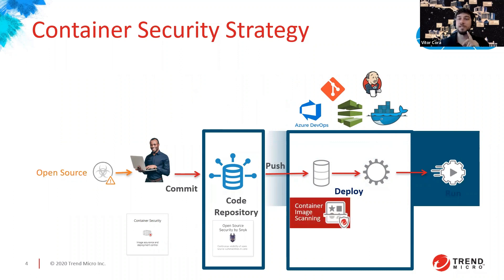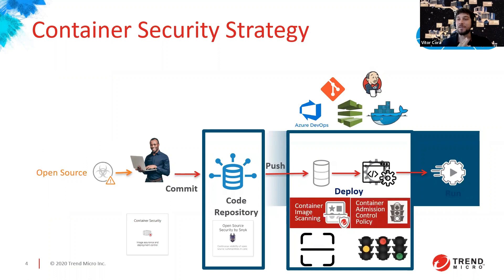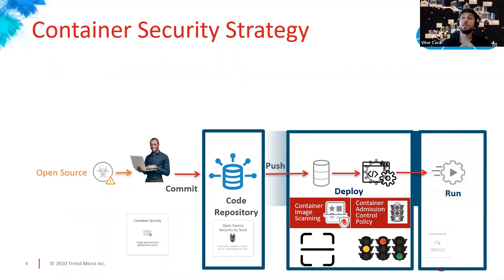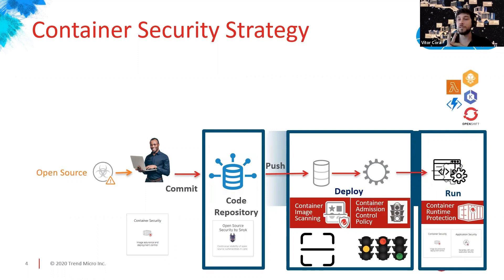The second step in our container strategy is image scanning. The moment the image goes to the registry, we scan for all vulnerabilities, malware, check against a checklist, and look for any secrets. This feeds our next decision step: based on the scan results, we decide if the image passes or gets blocked depending on our guardrails, before it goes to production and runtime. In runtime we have two layers of protection — the fourth and fifth moments of our container strategy.